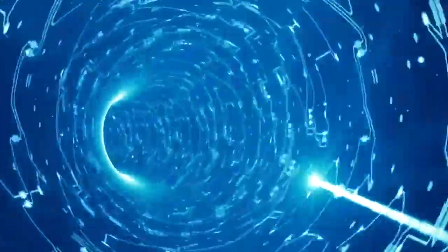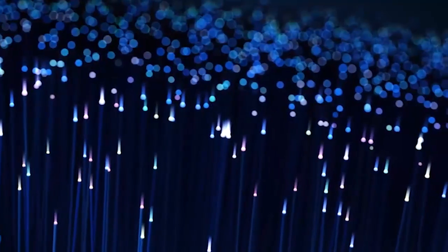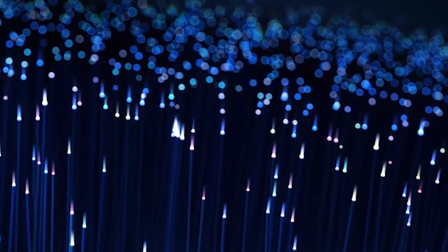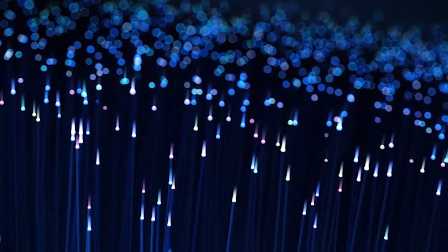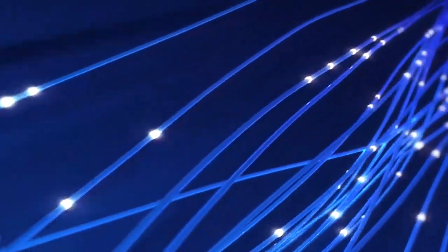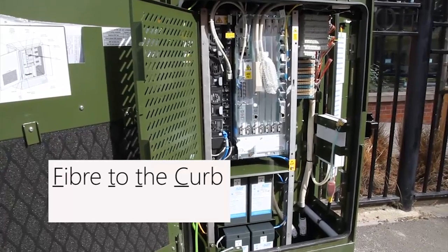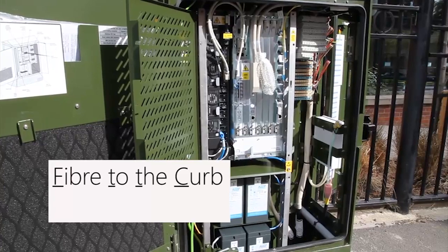And of course that something else is fiber. And both companies already use fiber extensively in their networks so much so they're allowed by Ofcom to call it fiber broadband. But this typically means there's fiber everywhere except actually for the last bit that goes to your home. This is known as fiber to the curb or FTTC.